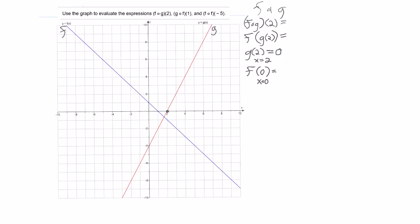Here is x equals 0. And if you start at x equals 0, which is the center, and you go up to the blue line, you see that the blue line is at y equals 1. So f of 0 is 1. And that's the answer to f of g of 2. The answer is 1.